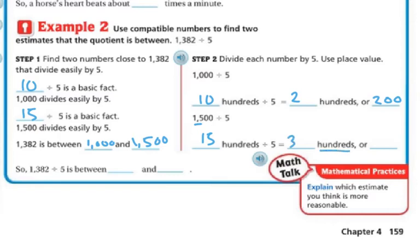So we know that 1,382 divided by 5 is going to be between 200 and 300.